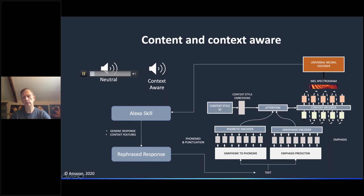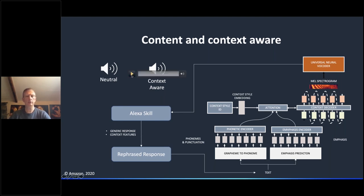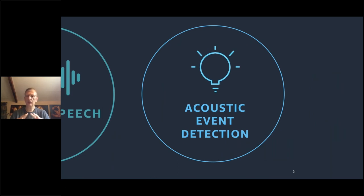Let's listen to an example with a static neutral response: 'Very happy to help. Let's find something you like on Amazon Music. How about something from the 80s? Does that work?' And now applying the context-aware technology: 'Very happy to help. Let's find something you like on Amazon Music. How about something from the 80s? Living on a Prayer by Bon Jovi. Does that work?' That's a very quick overview of where we are with the text-to-speech system. I'll now hand it over to my colleague Xiao, who will tell you about acoustic event detection.